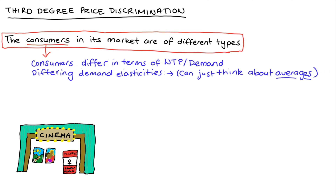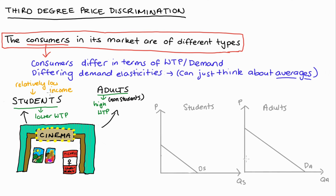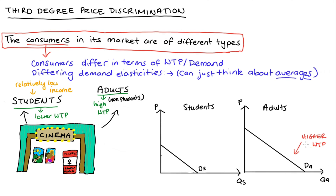The cinema knows that lots of different types of people see films, and they might distinguish especially between students and non-student standard adults. It's reasonable to suggest that students have a lower willingness to pay for cinema tickets compared to non-student adults, because students are likely to be on a relatively low income — if they're working at all, they're probably only working part time to make time for study. If we drew out demand curves for each type of consumer, the demand curve on the left-hand side is for our students — it's smaller than the demand on the right-hand side, which is for our non-student adults. We can see that non-student adults have a higher willingness to pay for cinema tickets relative to students.